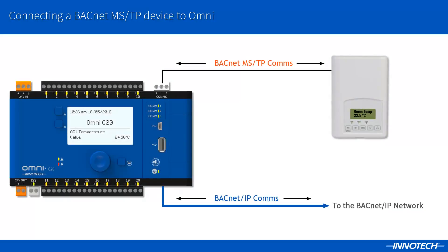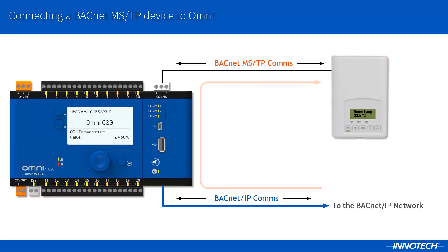Connecting a BACnet MSTP device to an Omni controller is a simple exercise. A few items need to be correctly configured for a successful integration. Once connected, Omni by default automatically routes the MSTP data through to the BACnet IP network. The device data can then be viewed in ICOM via a BACnet connection or shared across the BACnet network to other Omni controllers.